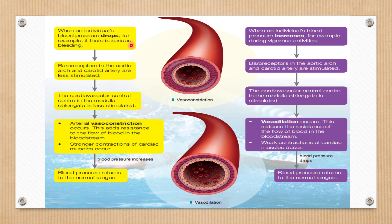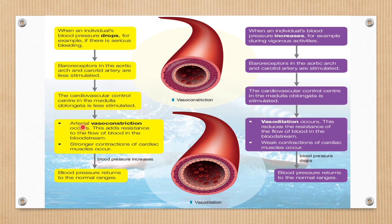When an individual's blood pressure drops — for example, during serious bleeding from an accident — blood flows out of the body and blood pressure falls. The baroreceptors in the aortic arch and carotid artery are less stimulated, and so the cardiovascular control center in the medulla is also less stimulated.